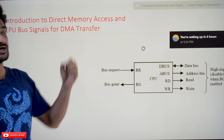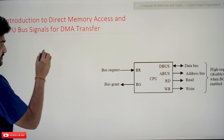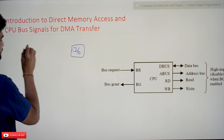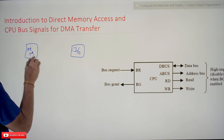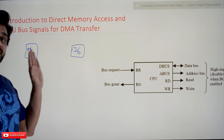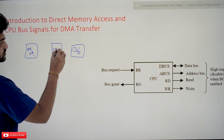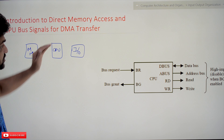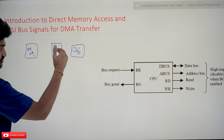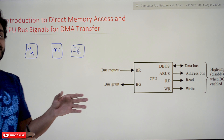In programmed I/O and interrupt-initiated I/O, whenever an I/O device is required to transfer some data onto the memory, or whenever the memory wants to transfer some data onto the I/O device, that transfer is done only through the CPU. In programmed I/O, the CPU continuously monitors the I/O device, and whenever the data is ready for transfer, it transfers the data through the CPU onto the memory.